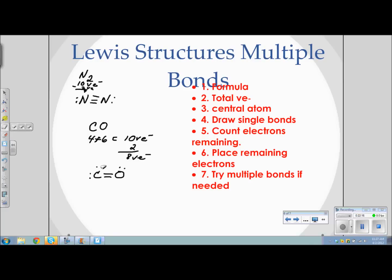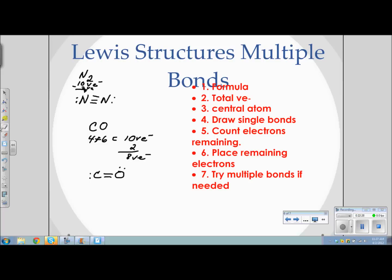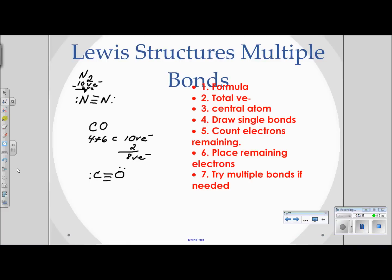We repeat the process: carbon erases a lone pair and shares it into the bond. Now both carbon and oxygen have eight electrons — two, four, six, eight each. The correct Lewis structure for CO shows a triple bond, ideally with one lone pair on carbon and one on oxygen, spread as far apart as possible.